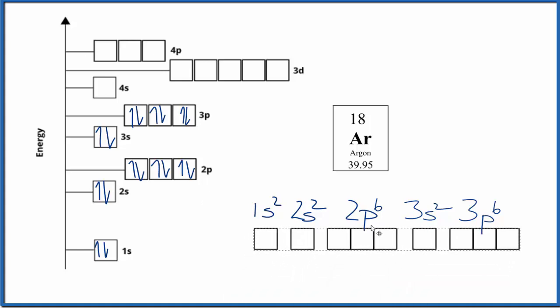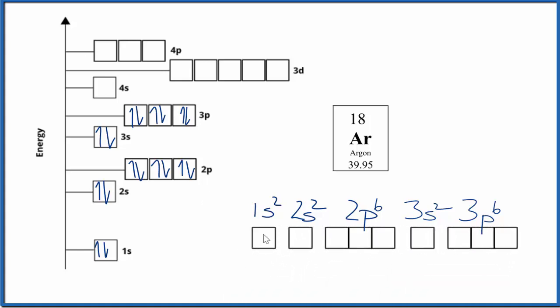Sometimes you'll see it written like this. It's the same thing, just written in a horizontal fashion. This is Dr. B with the atomic orbital diagram for argon, A-R. Thanks for watching.